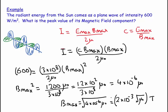So two equations: the intensity of light is equal to the average Poynting vector, which is E max B max over 2 mu naught, and C, the speed of light, equals E max over B max.